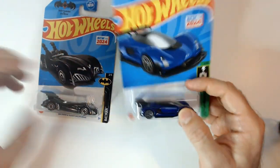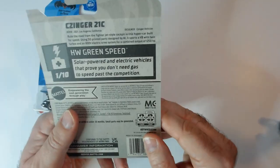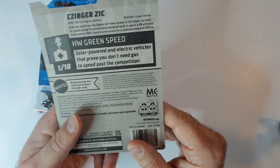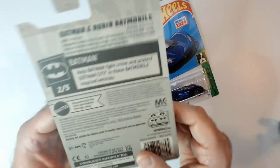Let's pop it open. So this is what? Green Speed, solar-powered electric vehicles. Of course, this is Batman and Robin.